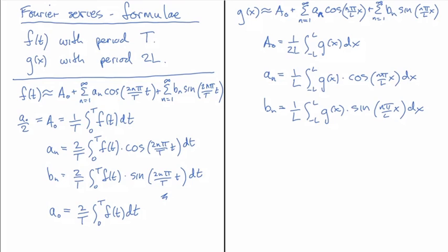And so those are two different ways of writing down the formula. We also sometimes define this version of a zero so that a zero can have a similar looking formula. In that case, 1 over L times the integral minus L to L, g(x), dx.